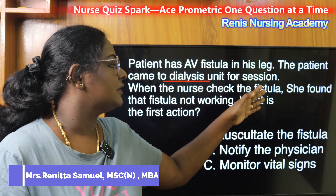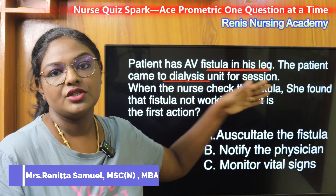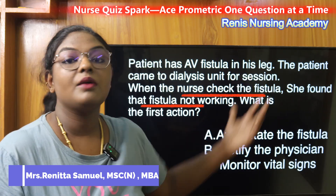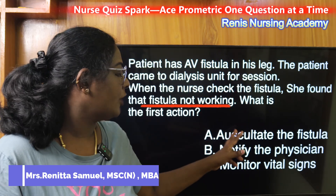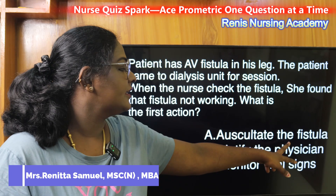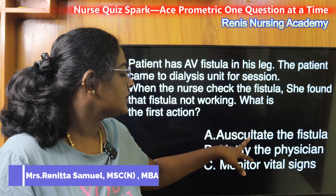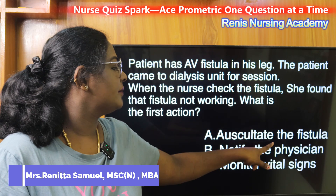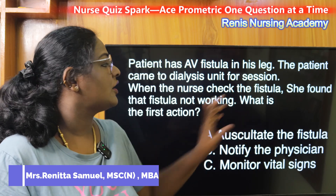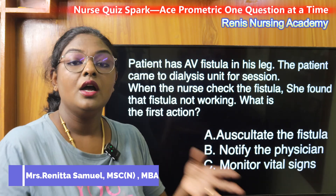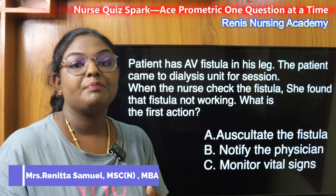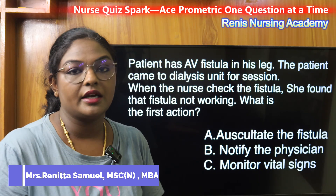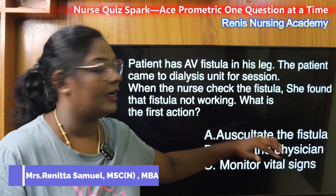The patient came for dialysis and the nurse checked the fistula as usual. Looking at option one — auscultate the fistula — if the fistula is already found not to be working, you would normally check for a bruit or thrill sound. But since the sound is not present, this option can be eliminated.